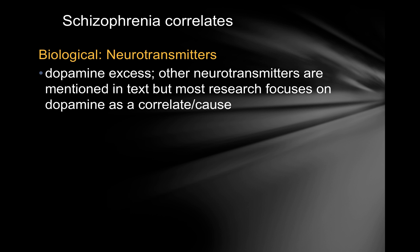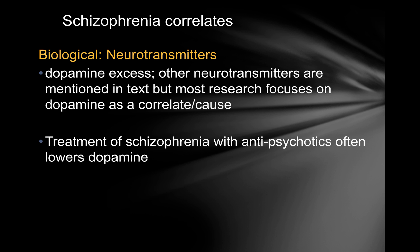Correlates of schizophrenia include an excess of the neurotransmitter dopamine. There are others mentioned in the text, but dopamine seems to be central in understanding schizophrenia. Antischizophrenic drugs — such as neuroleptics, antipsychotics, antischizophrenics — typically lower dopamine. And for roughly two-thirds of people who are schizophrenic, this can help control those symptoms and bring some relief.